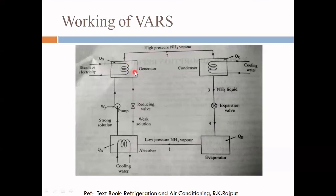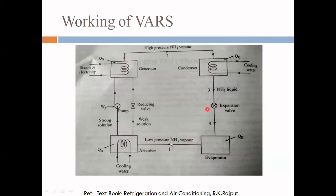Since the generator operates at high pressure and the absorber at low pressure, a pressure reducing valve is needed to reduce the pressure as the weak solution flows from the generator back to the absorber. The weak solution is supplied to the absorber, where the low-pressure NH3 vapor is absorbed by it, converting it back to strong solution, and the whole cycle repeats.